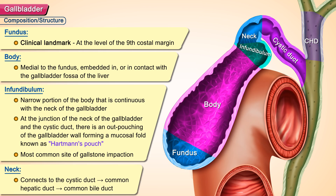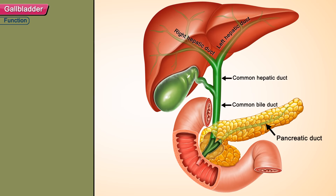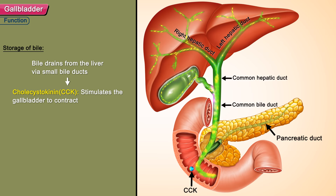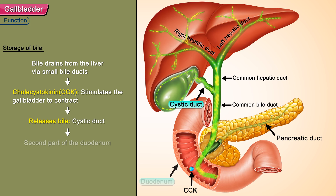The neck connects to the cystic duct, which leads to the common hepatic duct and then the common bile duct. Regarding storage of bile, bile drains from the liver via small bile ducts. Cholecystokinin stimulates the gallbladder to contract, which then releases bile through the cystic duct into the second part of the duodenum.